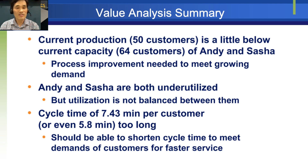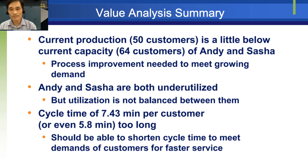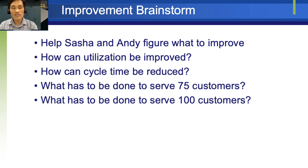The value analysis summary shows that current production of 50 customers is slightly below the current capacity of 64 customers per day — they can grow to accommodate up to 64 customers. Second, Andy is working harder than Sasha; the workload is unbalanced and they should find ways to balance it. Third, the cycle time is way longer than takt time and definitely needs to be shortened. After this analysis, Sasha and Andy should brainstorm ways to improve the business.